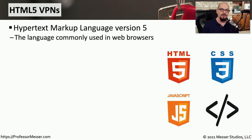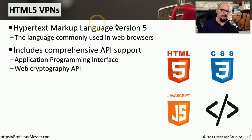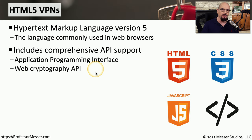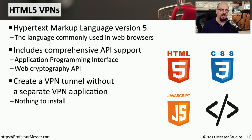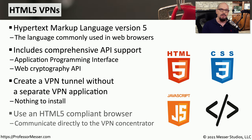Many of the latest browsers support VPN software running inside of them using HTML5 — Hypertext Markup Language version 5. One of the nice features of HTML5 is that it supports application programming interfaces and includes a web cryptography API as part of the browser. This means you don't have to install any software. You simply start your browser, connect to the remote network, and you're able to send SSL VPN communication without installing any additional code. The only thing you need is a browser that supports HTML5, and most modern browsers can use these capabilities.